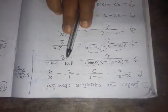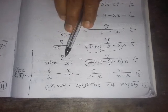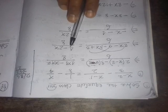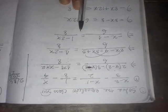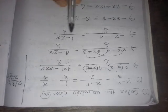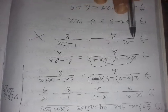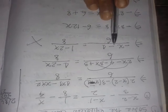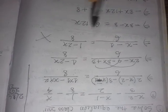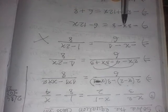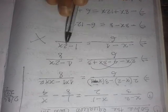On the right side, the LCM of 8 and 4 is 8. So we get 1 minus 2x by 8. Now we do cross multiplication. 8 into 8 gives 8, minus x, and 8 into x gives 8x, equal to 6, and 6 times 2 gives 12.